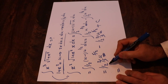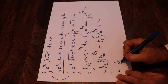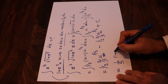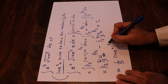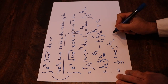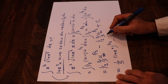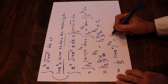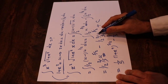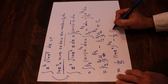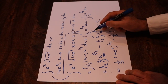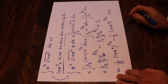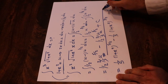So therefore, this will be equal to — the 2 is out here — that will be (1/5) times, instead of u, I write (1 + x²) with the power of 5/2, minus — these two are out here — so (1/3), instead of u, I write (1 + x²) with the power of 3/2, plus c, which is the constant of the integral.